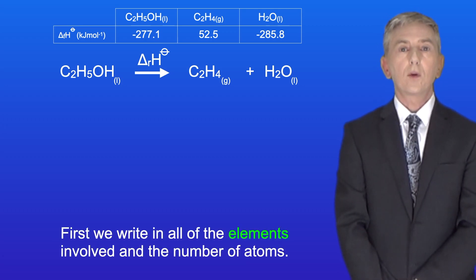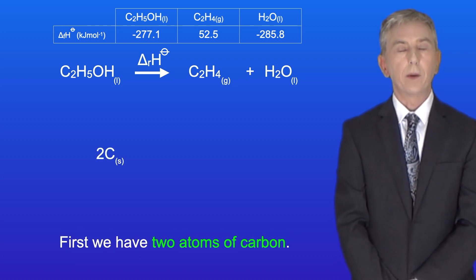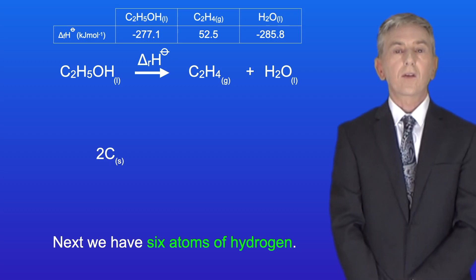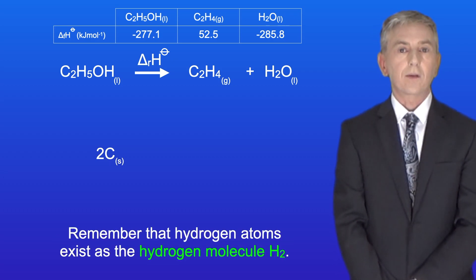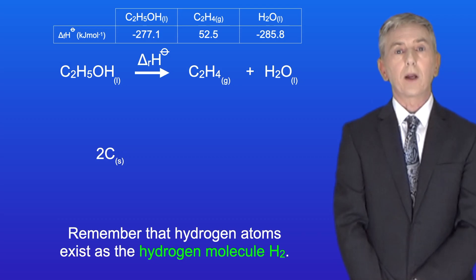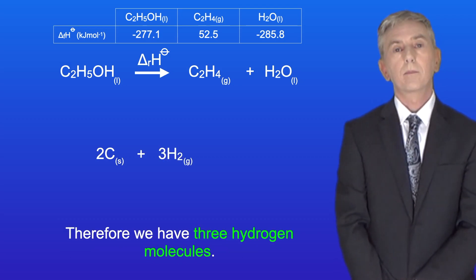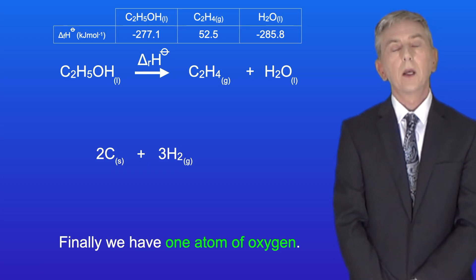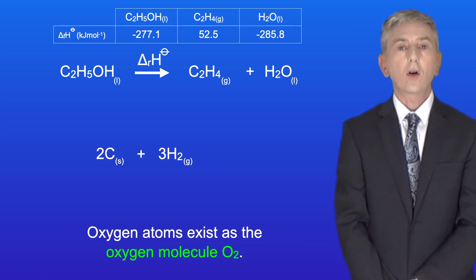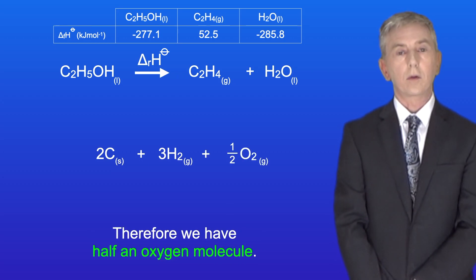First we write in all of the elements involved and the number of atoms. We've got two atoms of carbon. Next, we've got six atoms of hydrogen. Remember that hydrogen atoms exist as the hydrogen molecule H₂, therefore we've got three hydrogen molecules. And finally, we've got one atom of oxygen. Oxygen atoms exist as the oxygen molecule O₂, therefore we've got half an oxygen molecule.